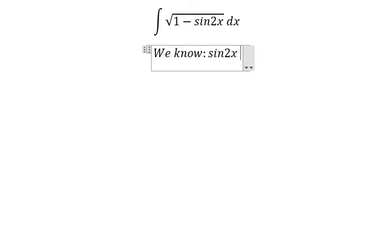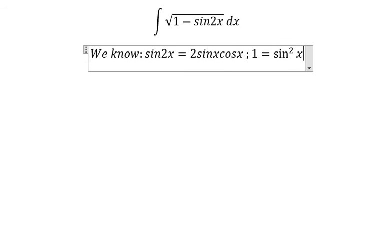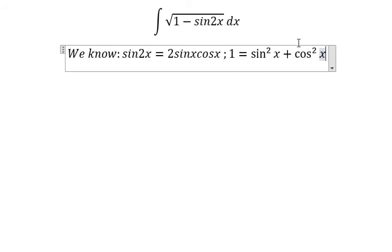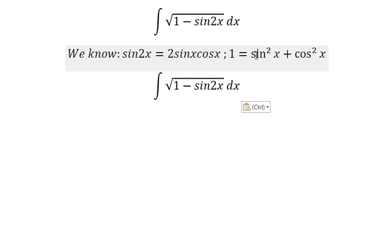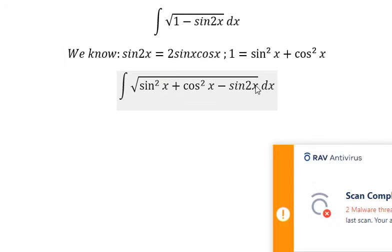sin 2x is equal to 2 sin x cos x. Number one is about sin²x plus cos²x. So we put this one in here, this one we change in here.